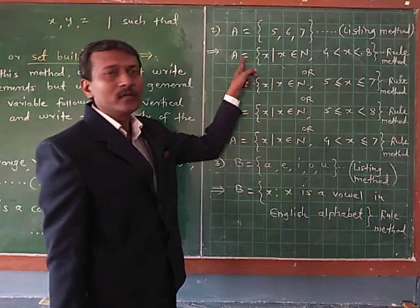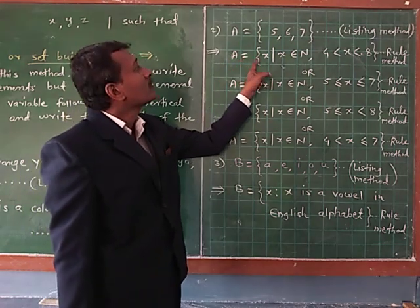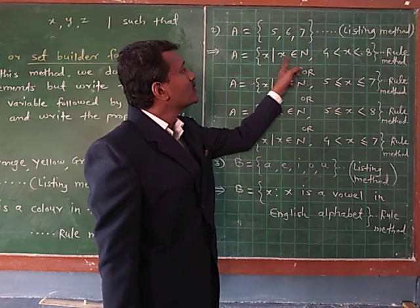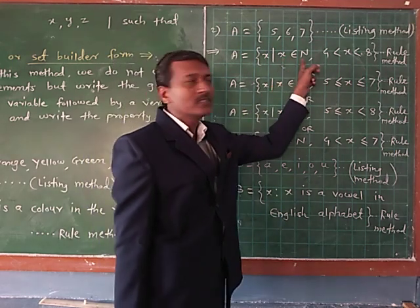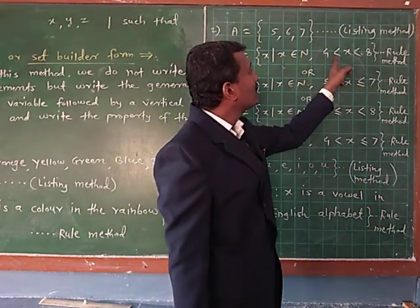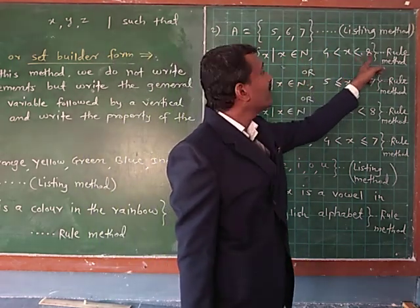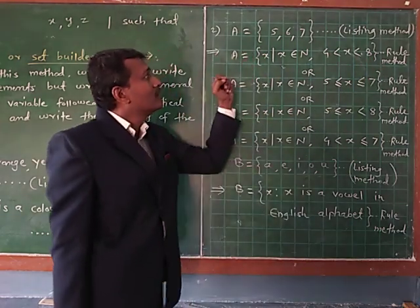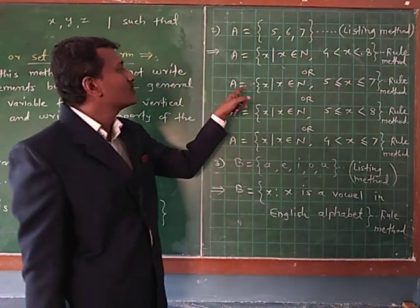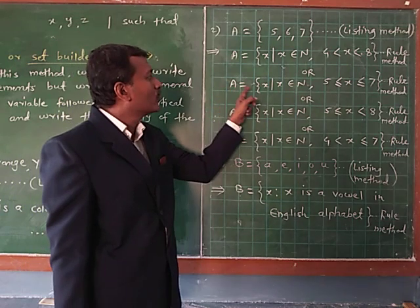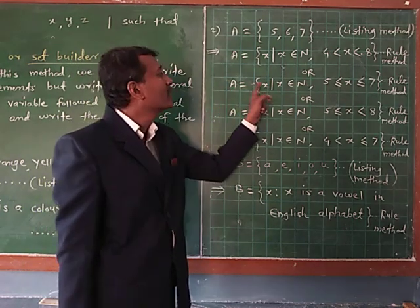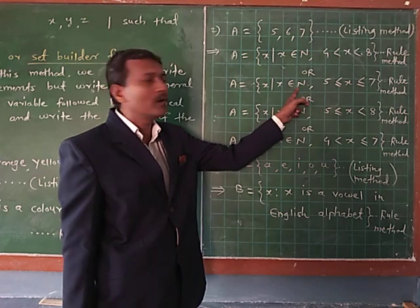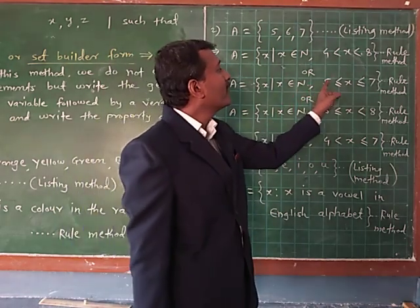B = { x : x belongs to natural number and 4 < x < 8 }. This example can also be written as: A = { x : x belongs to natural number and 5 ≤ x ≤ 7 }.